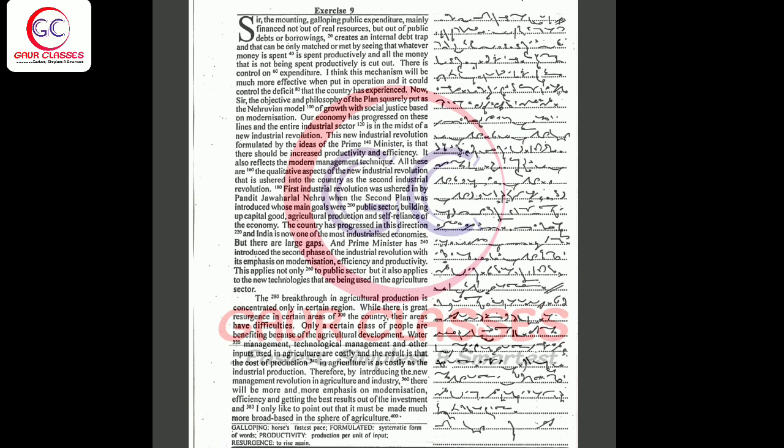industrial revolution that is ushered into the country as the second industrial revolution. The first industrial revolution was ushered in by Pandit Jawaharlal Nehru when the second plan was introduced, whose main goals were public sector building, capital goods, agricultural production, and self-reliance of the country. The country has progressed in this direction.